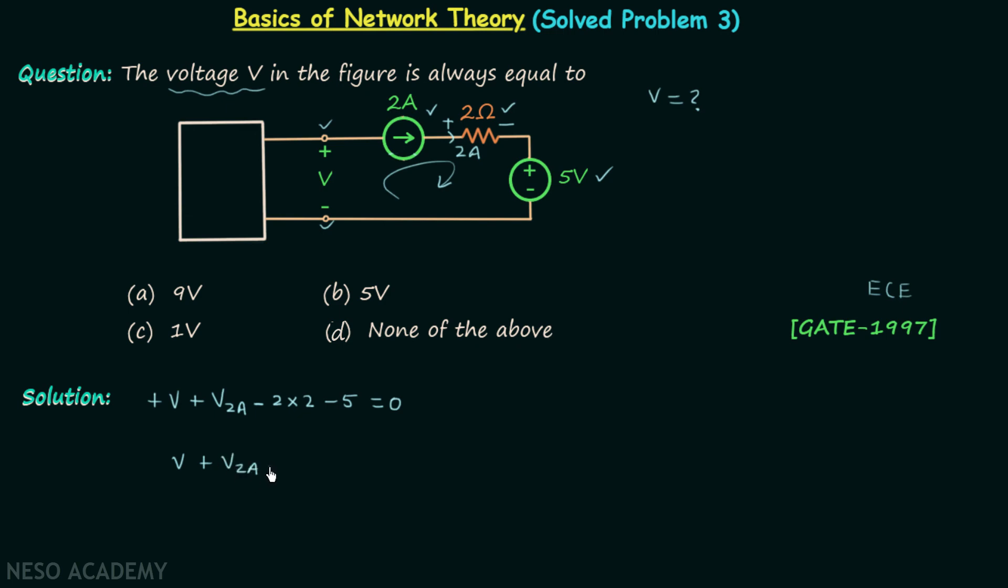Minus 4 minus 5 is equal to minus 9, so finally we have V plus V sub 2A minus 9 equal to 0. So we have one equation, and in this one equation we are having two unknowns.